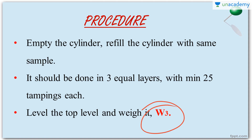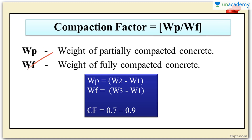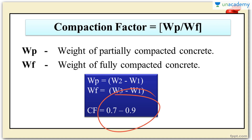So we have W1 as the weight of the cylinder, W2 as the weight of cylinder plus partially compacted concrete, and W3 as the weight of cylinder plus fully compacted concrete. Compaction factor is the ratio of weight of partially compacted concrete to weight of fully compacted concrete. WP = W2 − W1, WF = W3 − W1. Applying these values to the formula gives the compaction factor, which generally lies between 0.7 and 0.9.